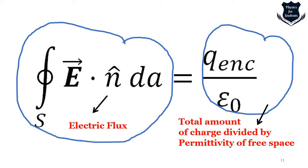For a closed surface of any size and shape with no charge inside, the electric flux through it must be zero. If a positive charge is placed inside, the flux is positive. If an equal amount of negative charge is then added, making the net enclosed charge zero, the flux returns to zero.